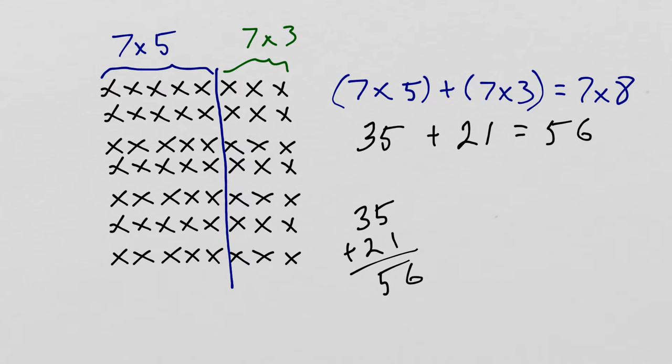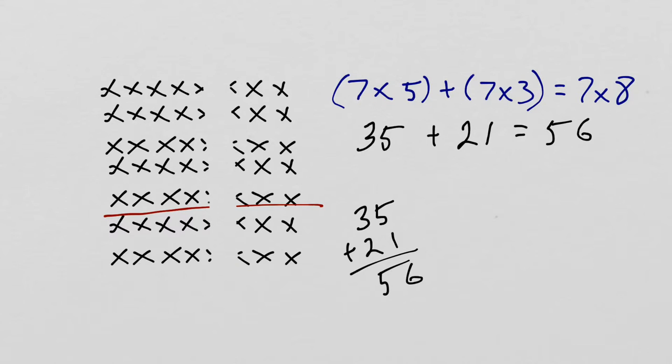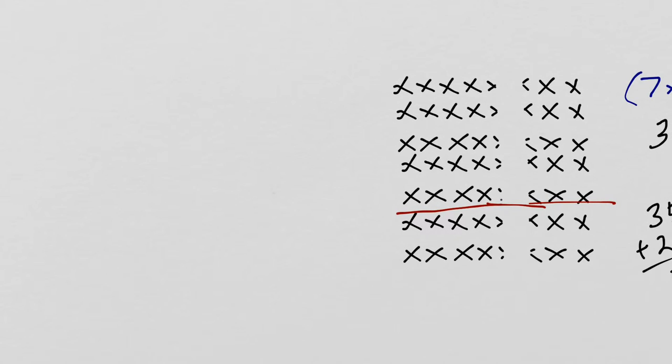I could have also broken it the other way. Instead of breaking it like that, I could have gone down this way and created 5 rows of 8 and 2 rows of 8 and it would still work the same way. What I would have now is 5 rows of 8 or 5 times 8 plus this which is 2 rows of 8 or 2 times 8.